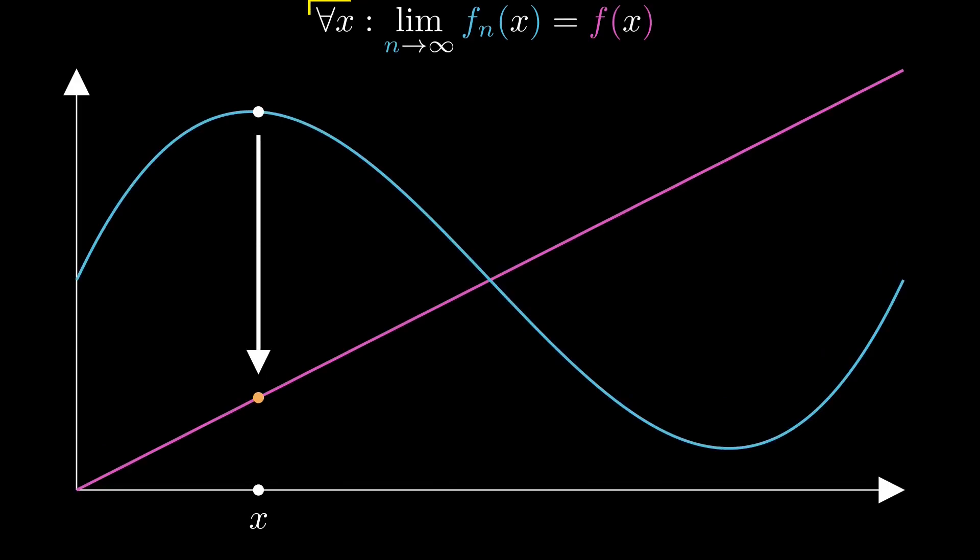We want this behavior to be true for all possible input points x. That's the reason why we also speak of pointwise convergence.